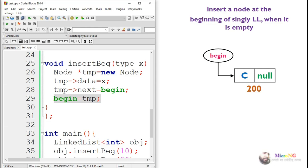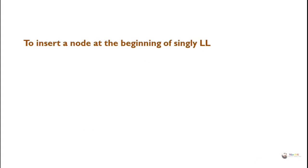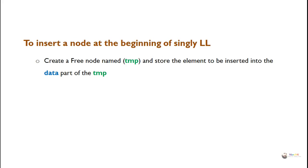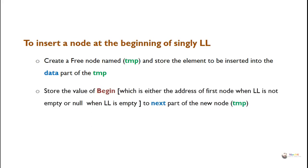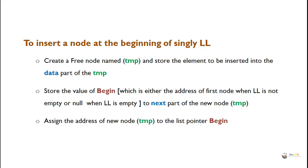To insert a node at the beginning of a singly linked list, follow three steps. First, create a new node named temp and store the element to be inserted into its data part. Second, store the value of begin — which holds either the address of the first node when the list is not empty, or null when it is empty — into the next part of the new node. Third, assign the address of the new node to the list pointer begin.